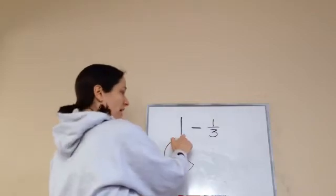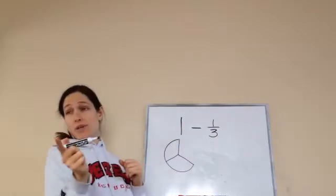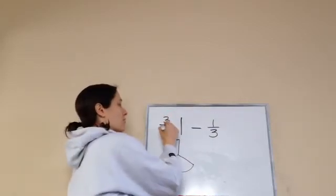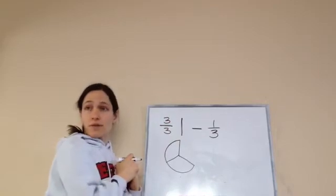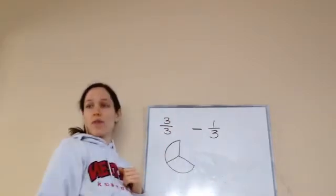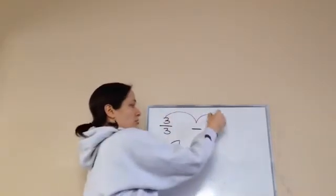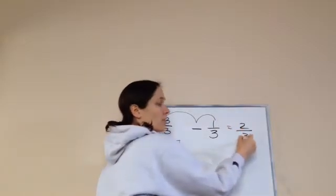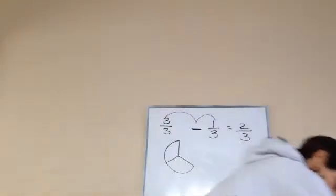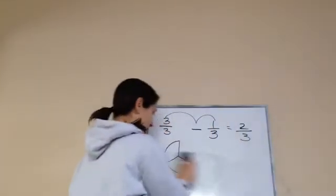Now, another way that we can see this from the other lessons that we've been doing is to go 3 out of 3 minus 1 third. And then we know that we subtract those to get 2 thirds. Remember doing that? Alright, let's try a few more on what I mean by that.